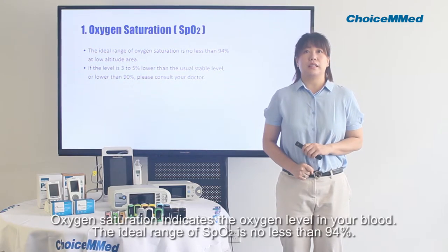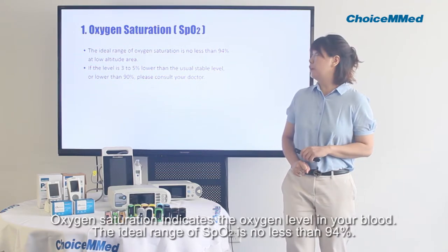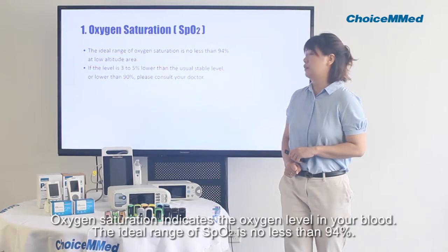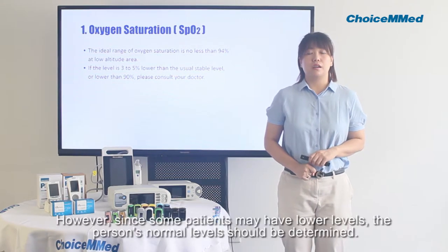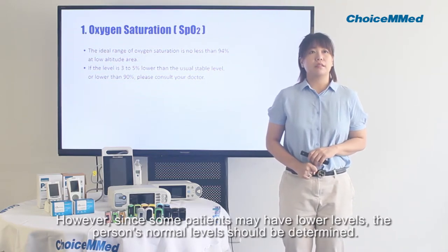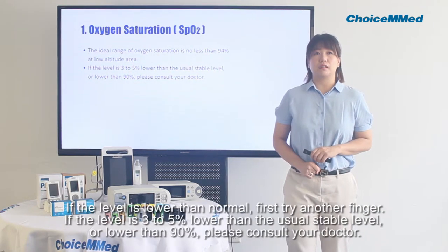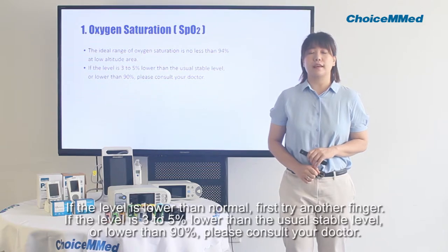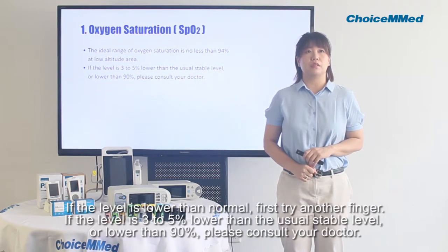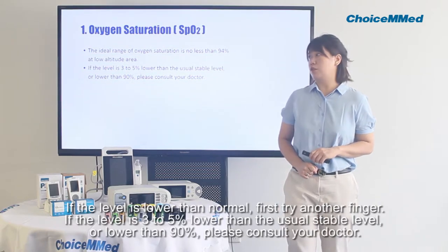Oxygen saturation indicates the oxygen level in your blood. The ideal range of oxygen saturation is no less than 94%. However, as some patients may have low levels, the person's normal levels should be determined individually. If the level is lower than normal, first try another finger. If the level is 3–5% lower than the usual stable level or lower than 90%, please consult your doctor.